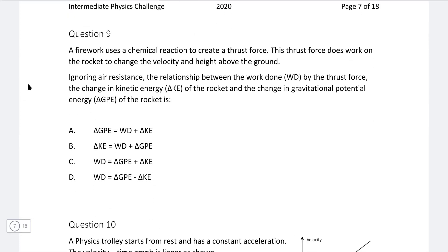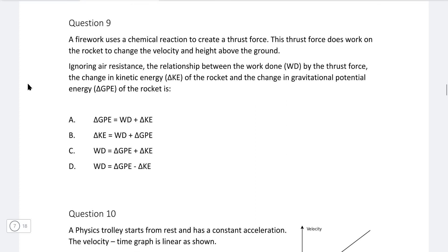Okay, question nine. A firework uses a chemical reaction to create a thrust force. The thrust does work on the rocket to change the velocity and height above the ground. Ignoring air resistance, the relationship between the work done by the thrust force and the change of kinetic energy and the change in gravitational potential energy of the rocket is?